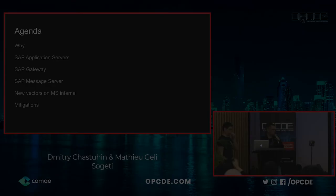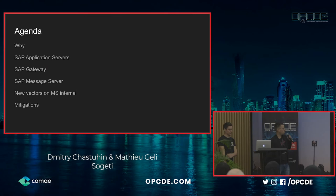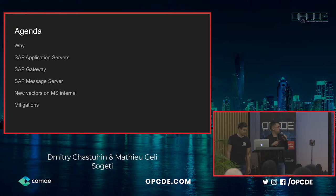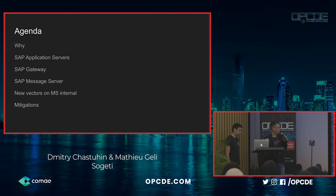Our agenda today is to give you a glimpse about our research process and why we did this specific research on SAP. We'll present the fundamentals of the SAP application servers, then focus on specific components where we found issues — the gateway and the message server — and present new attack vectors to compromise systems through these problems, as well as mitigations.